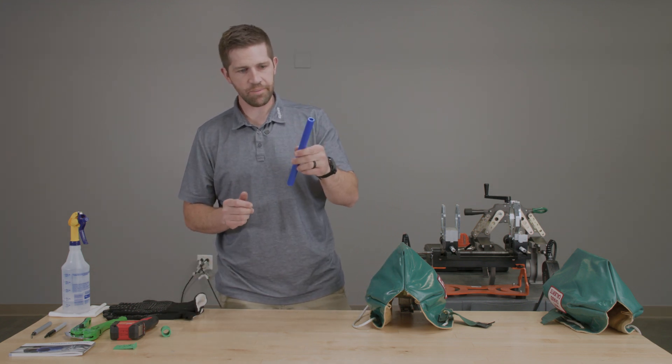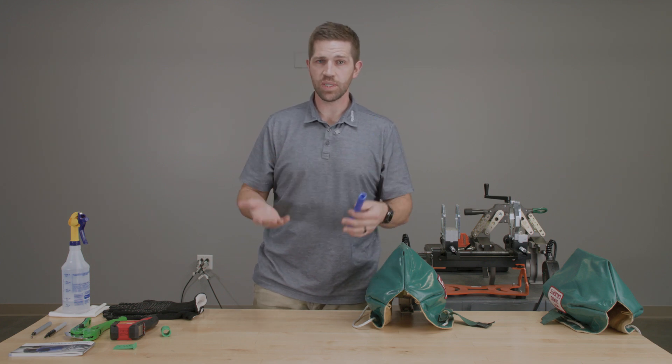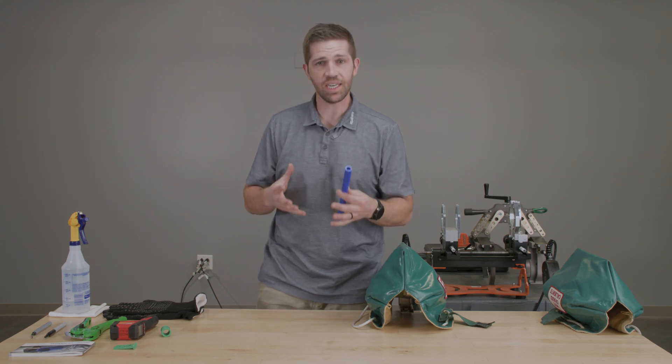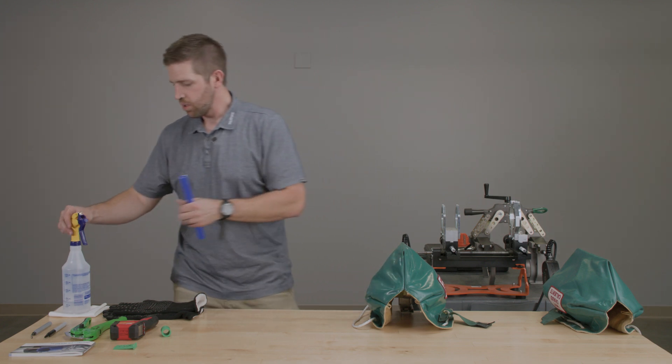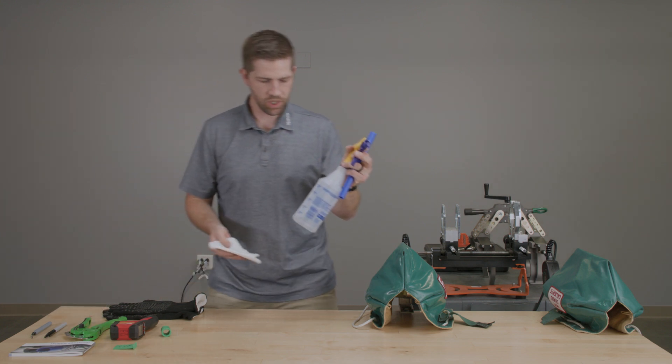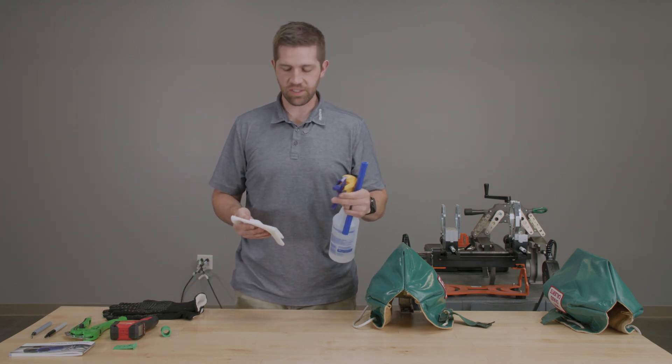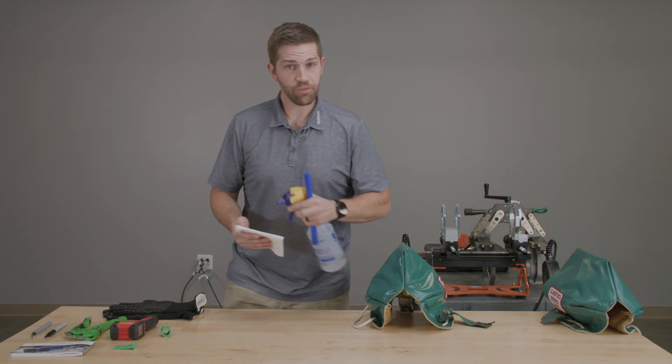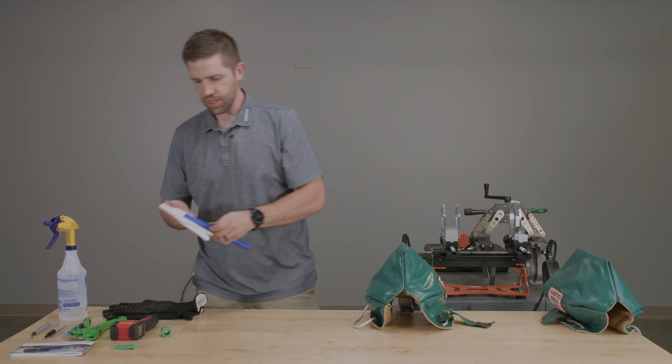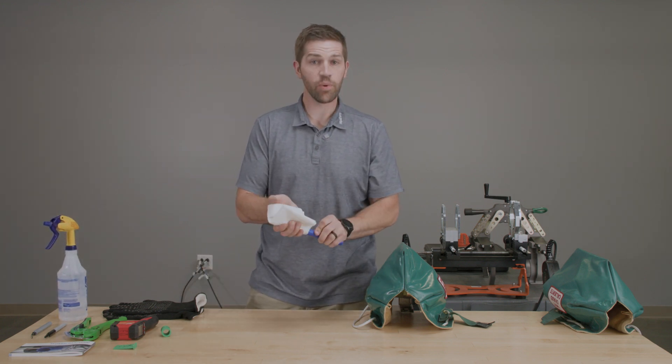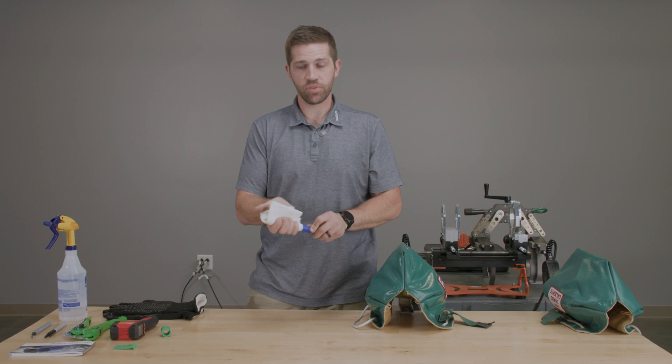Now that we have the pipe cut, the next thing we need to do is clean it prior to heating and fusing. We're going to use 91% isopropyl alcohol in a lint-free cloth. We're going to clean the end of the pipe where we're prepping for socket fusion.